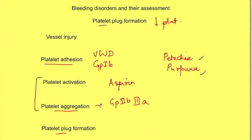The disorders of platelet plug formation can be assessed by various tests. One is platelet count - if there is decrease in number of platelets, there will be decreased platelet plug formation. Second is bleeding time, which assesses the time taken for bleeding to stop after an injury.